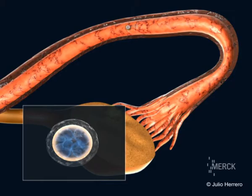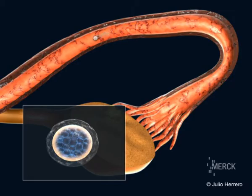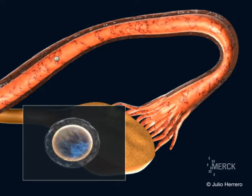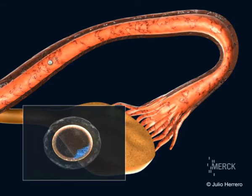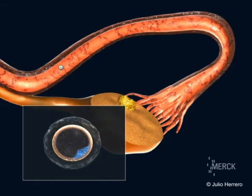At the end of four days, the embryo continues to divide itself, at which point it is called the morula. The interior of the embryo has an area filled with liquid, and this is called the blastocyst.